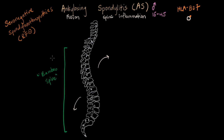While bamboo spine is what we think of immediately when we see AS, remember that it's a systemic autoimmune disease, which means it could potentially affect everywhere in the body. This person might have fever, malaise, or other non-joint problems.